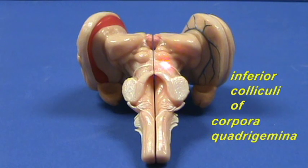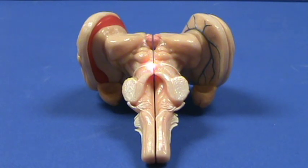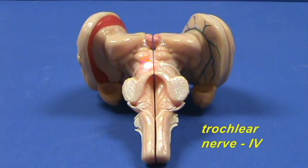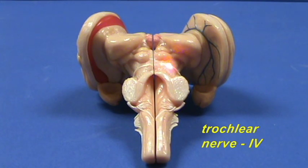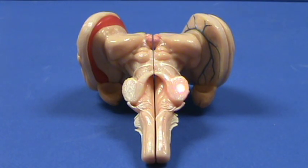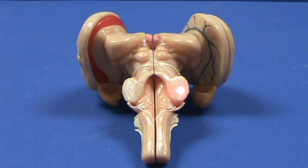Here you can see the origin of the trochlear nerve, cranial nerve Roman numeral four, right over here.